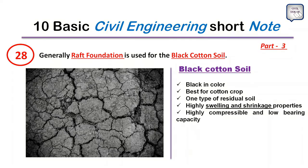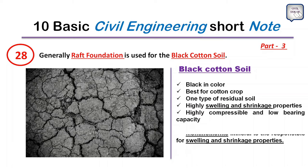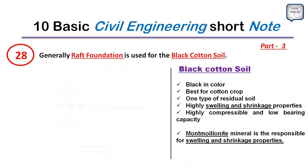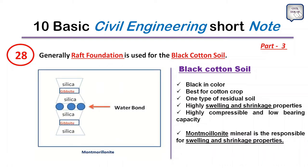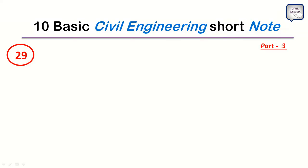To avoid differential settlement on black cotton soil, raft foundation is provided. The montmorillonite mineral is responsible for the swelling, shrinkage, high compressibility, and low bearing capacity. In montmorillonite, water bonds are present inside the molecular structure. Since the water bond is the weakest bond, it breaks down easily, causing high swelling and shrinkage properties.